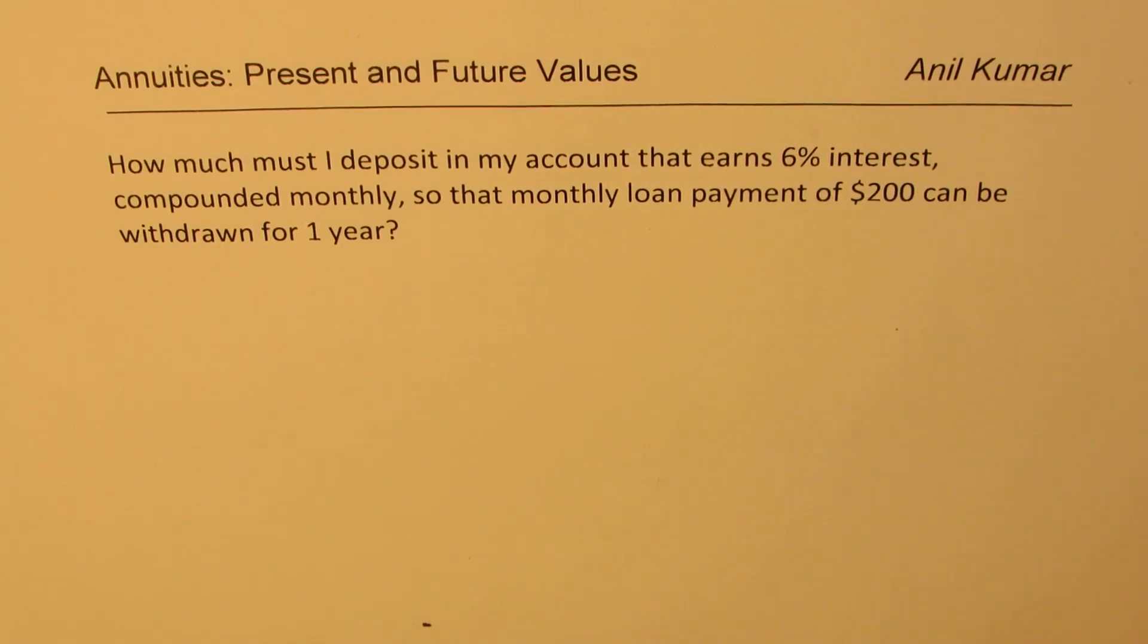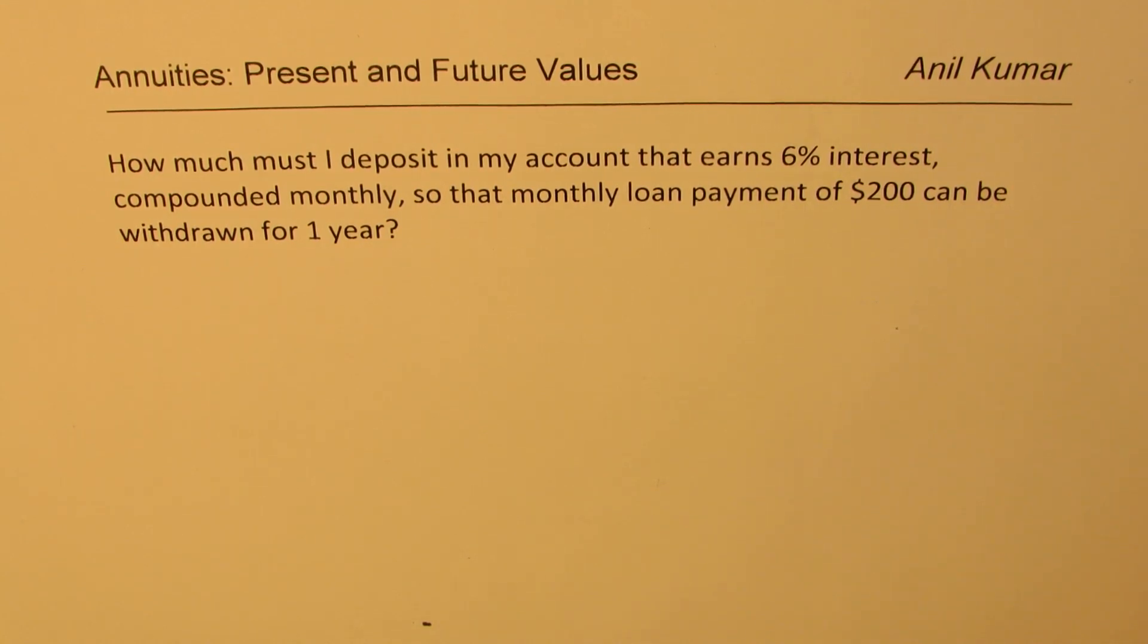Hi, I'm Anil Kumar sharing with you another excellent question based on annuities. In these questions, we need to figure out whether we are working on present value or future value. The question here is: how much must I deposit in my account that earns 6% interest compounded monthly so that monthly loan payment of $200 can be withdrawn for one year?